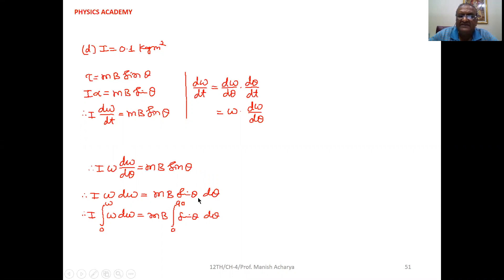Take this dθ on right hand side. So Iω dω = MB sin θ dθ.